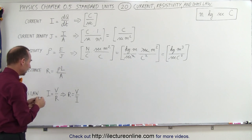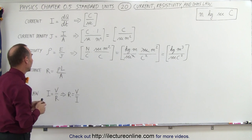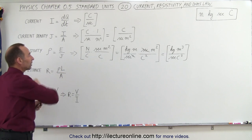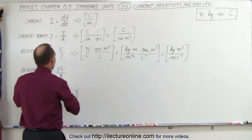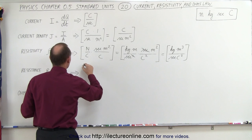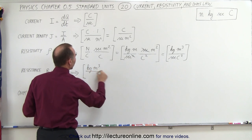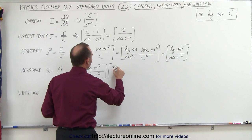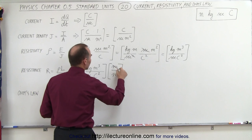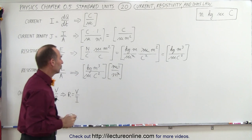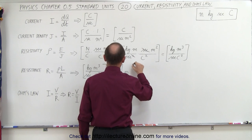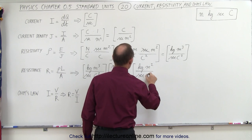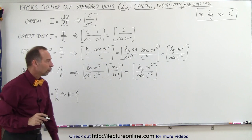Now the concept of resistance — the measure of the opposition to current for a device. We take the resistivity of the material times the length of the device divided by the cross-sectional area. Taking the units of resistivity — kilograms meters cubed divided by seconds times Coulombs squared — and multiplying by the ratio of length in meters divided by area in meters squared, one meter cancels out, reducing meters cubed by one. This gives us kilograms meters squared divided by seconds times Coulombs squared — the proper units for resistance.